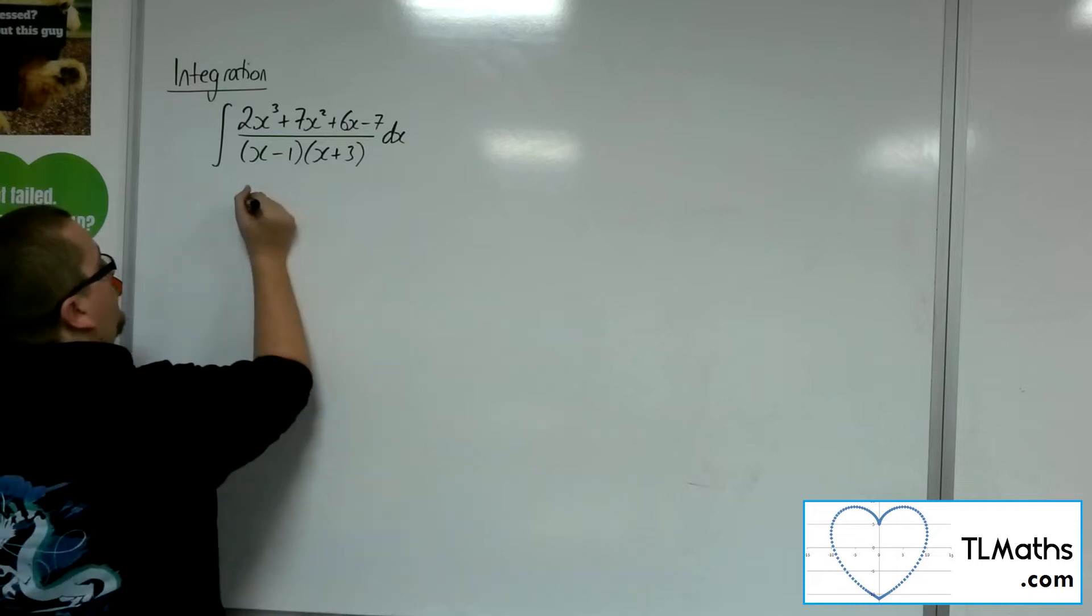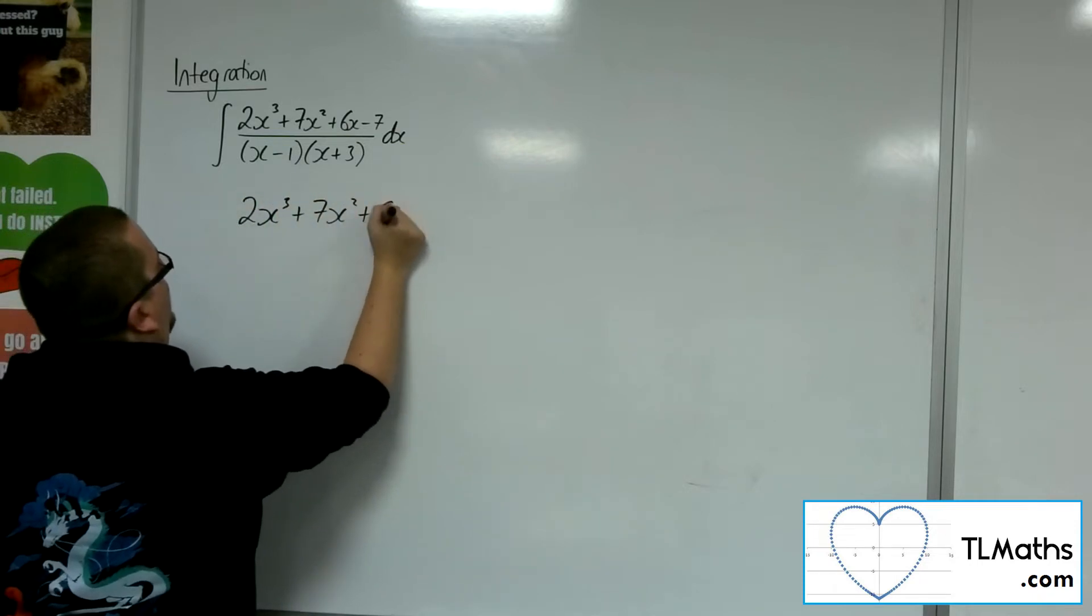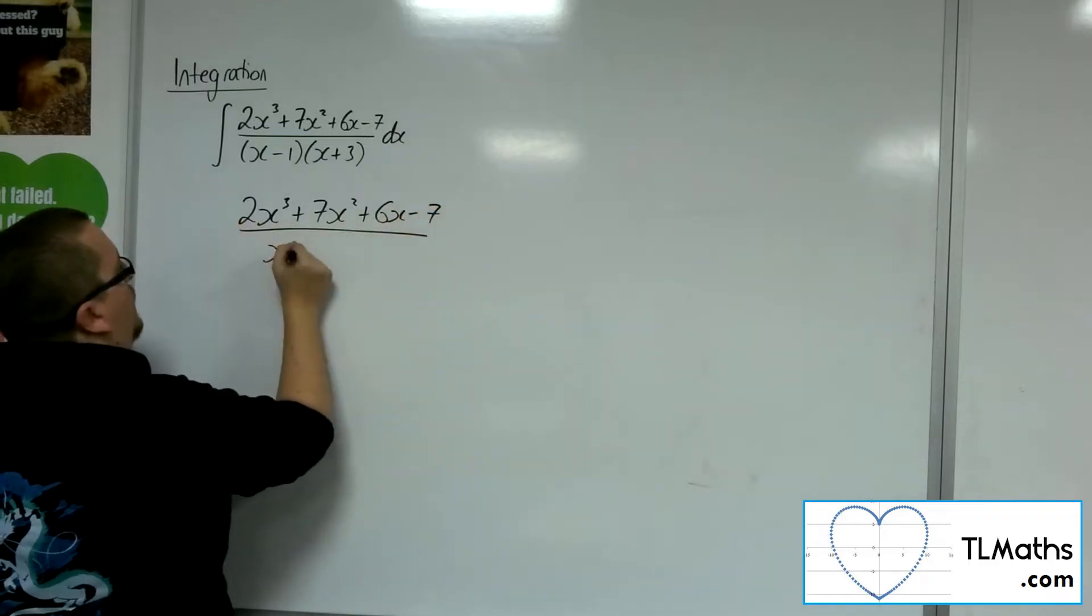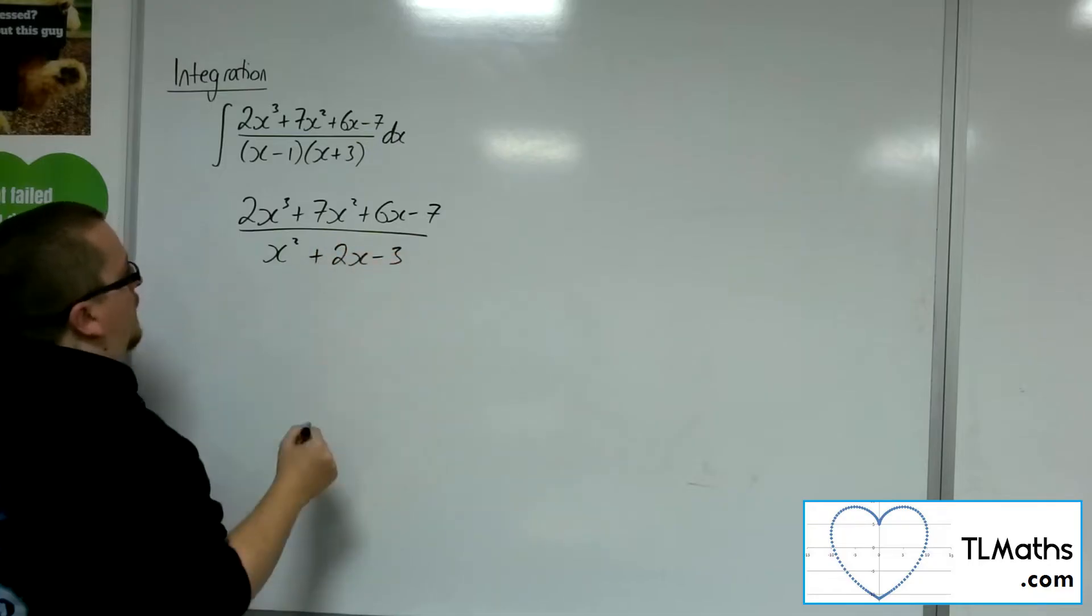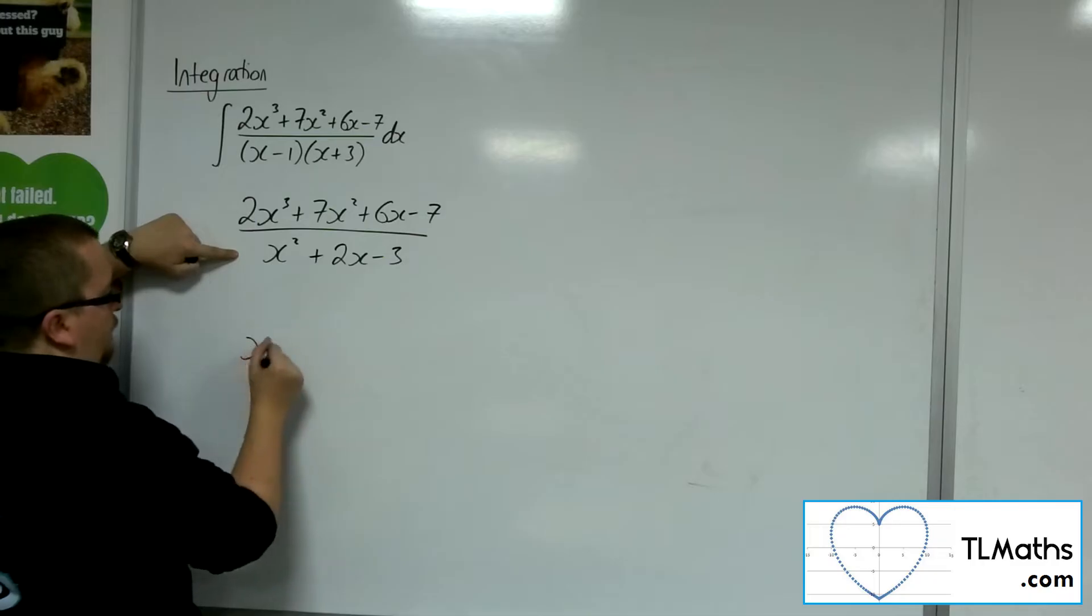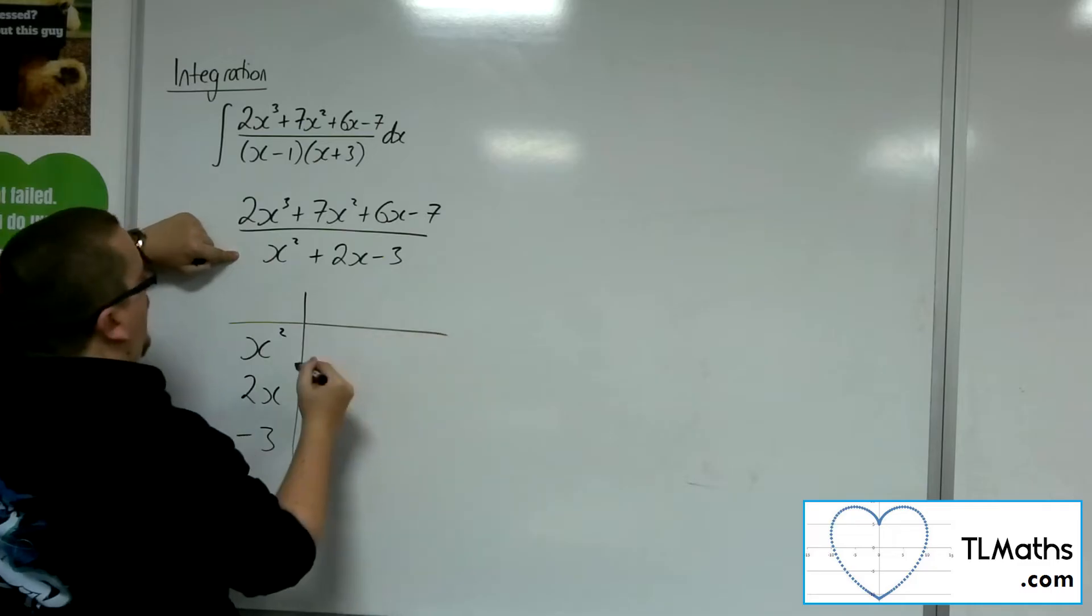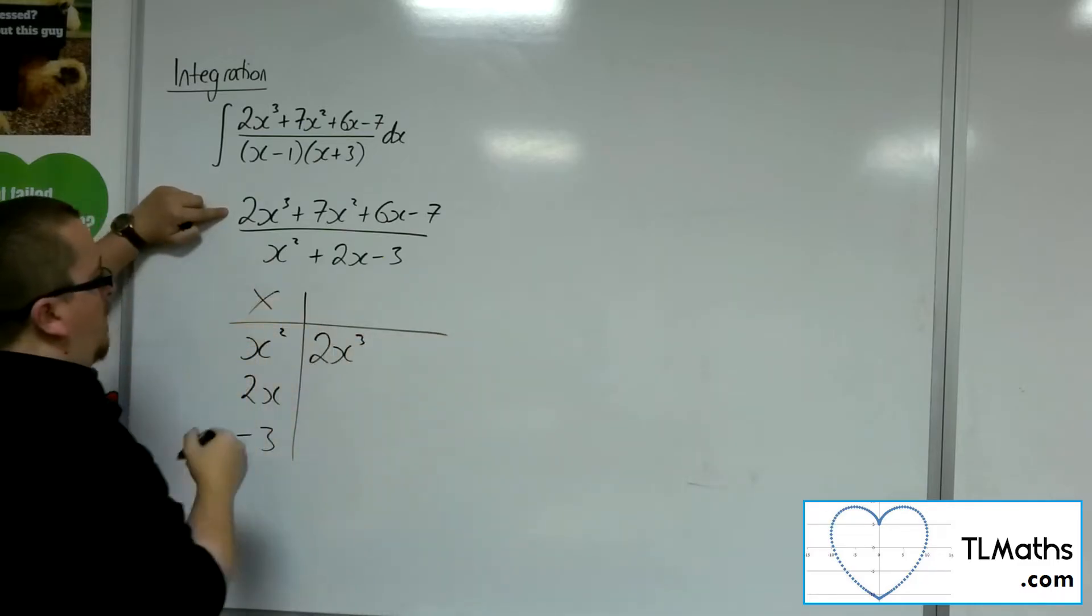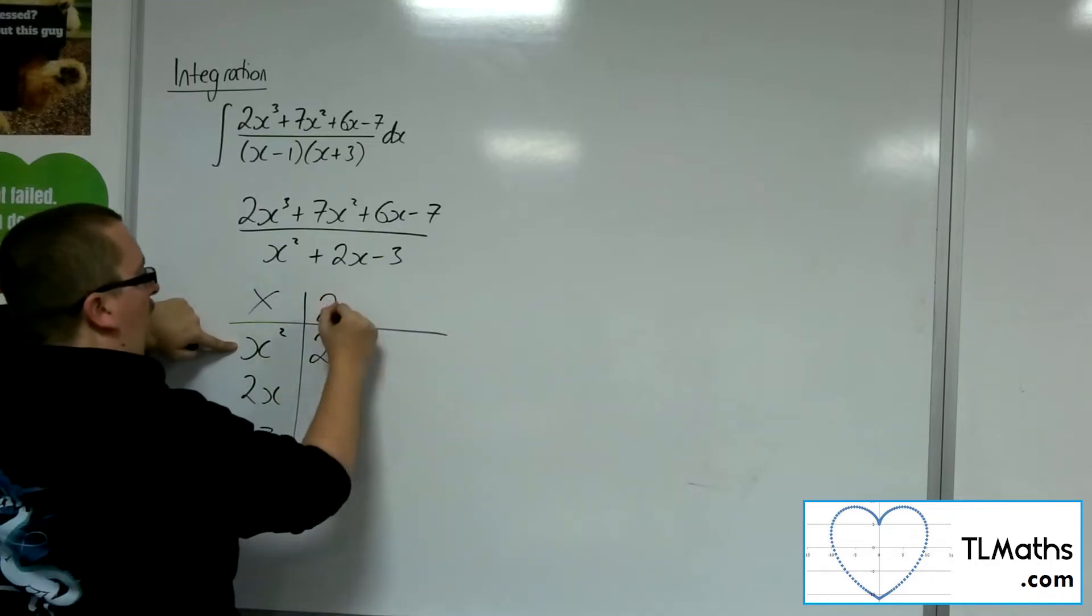So what I first of all want to do is to simplify this fraction using polynomial division. I'm going to multiply out the denominator. So I want to divide this cubic by this quadratic. So x squared, 2x minus 3. And I'm going to need 2x cubed for my multiplication grid. So x squared into 2x cubed gives me 2x.